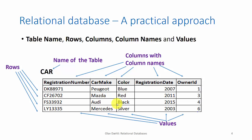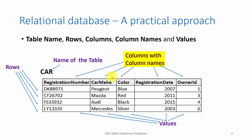To take a more practical approach, we call it a table instead of a relation, and say that the table has a name — like car here. And instead of tuples, we say that it has a set of rows. And instead of attributes, we say that it has a set of columns, and that each column has a column name. And in the table cells, or fields, data are stored as values.